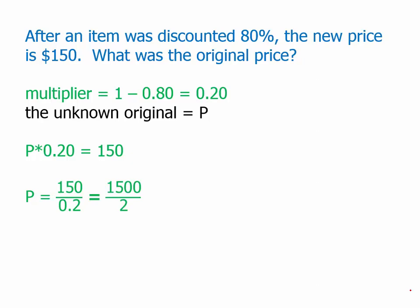Then we can divide 150 by 0.2. Multiplying numerator and denominator by 10, it's just 1500 divided by 2, which is 750. So that's the original price. That's how to find it with the multiplier.